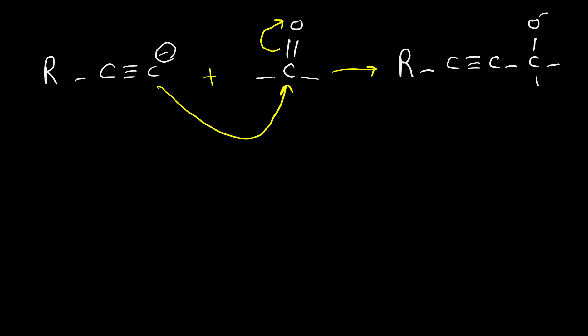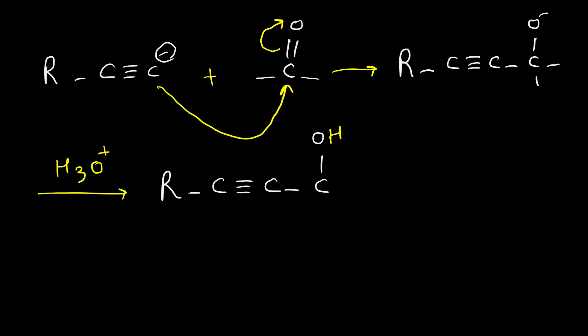After addition of the acetylide anion to the carbonyl group we need to acidify the reaction. By adding acid we're going to neutralize the intermediate and the negative oxygen turns to OH. This type of alcohol is called an alkinol — it means we have a triple bond and also an alcohol in the same molecule.